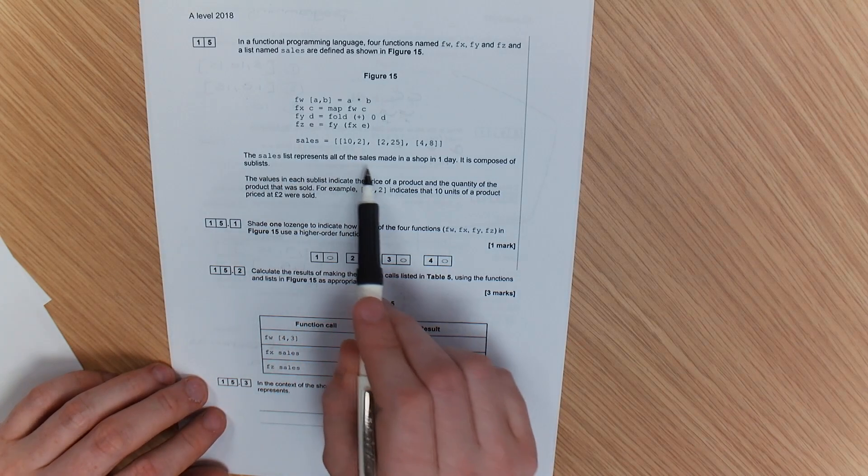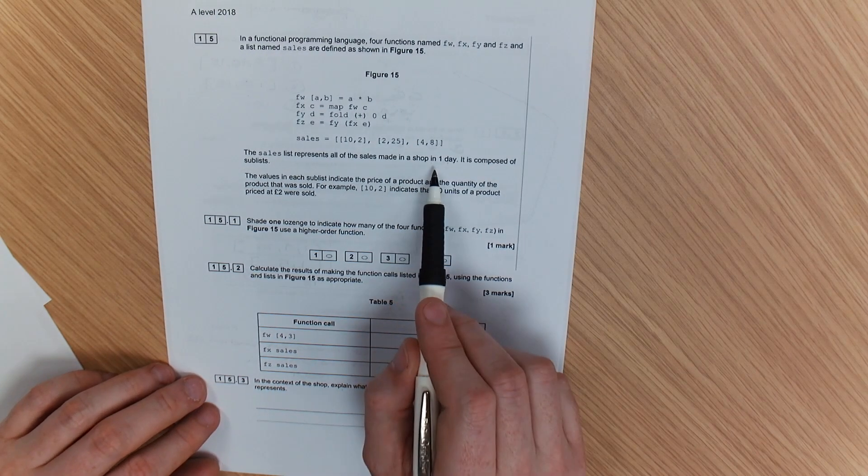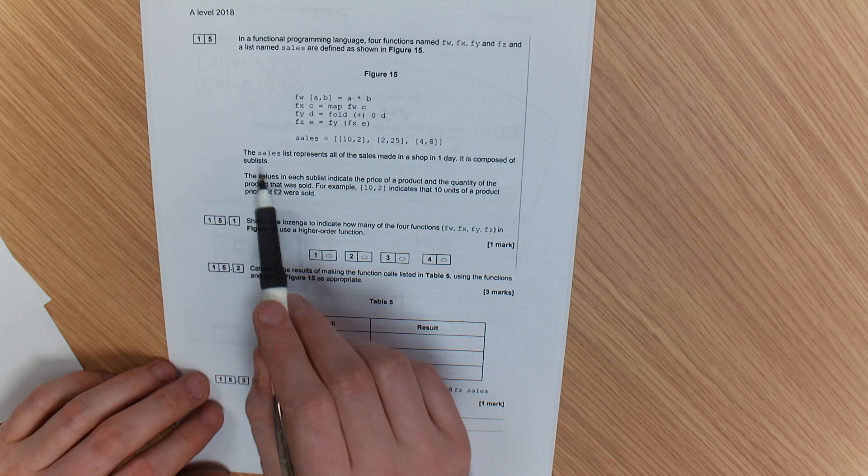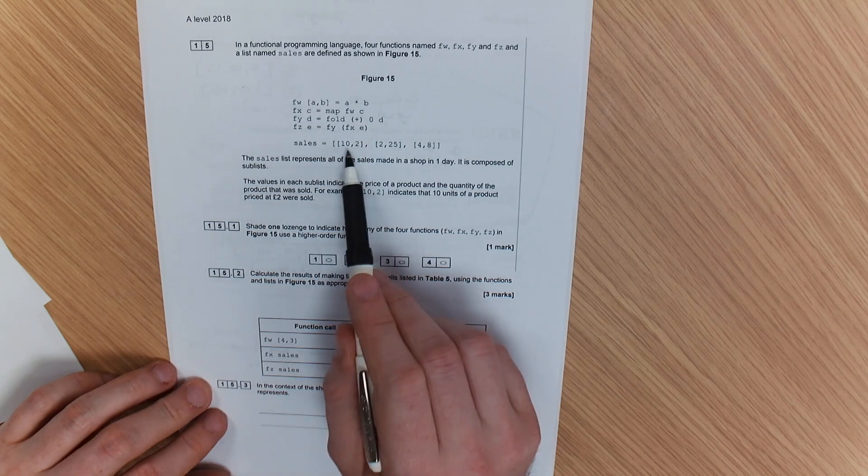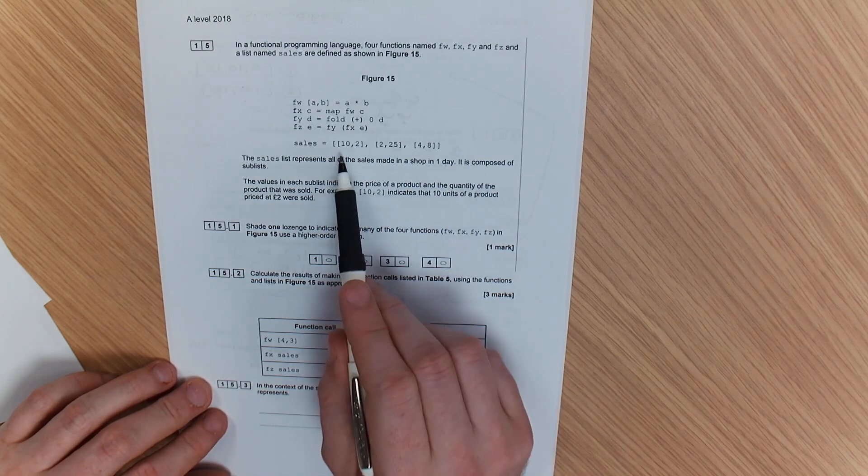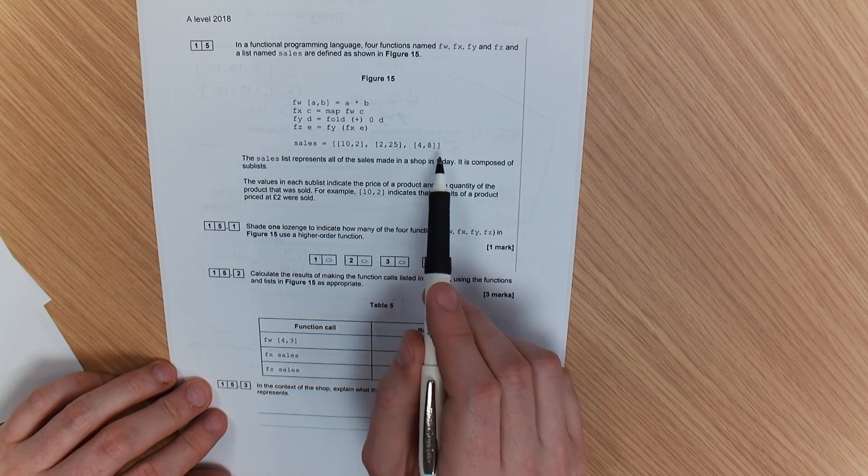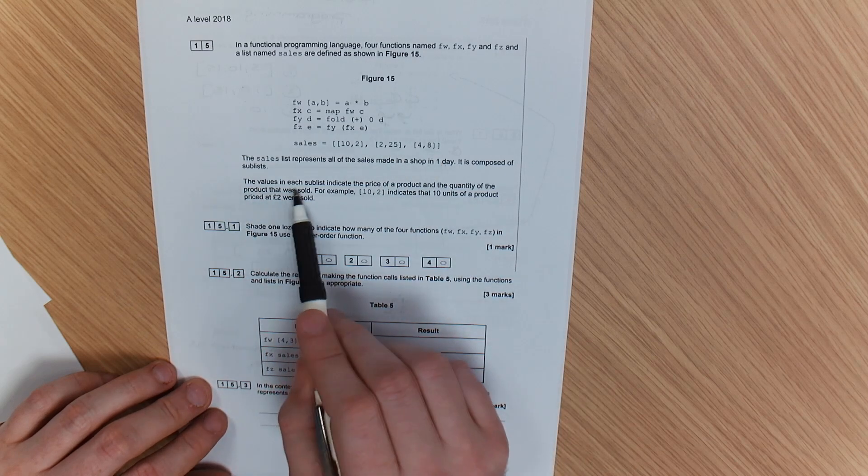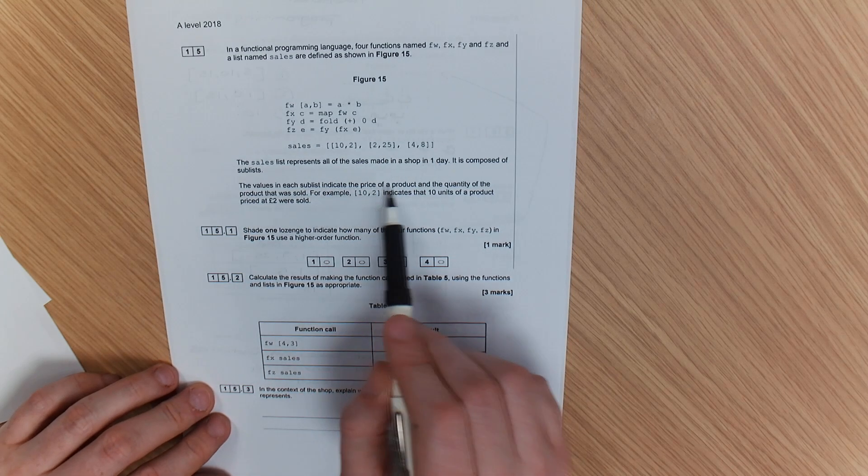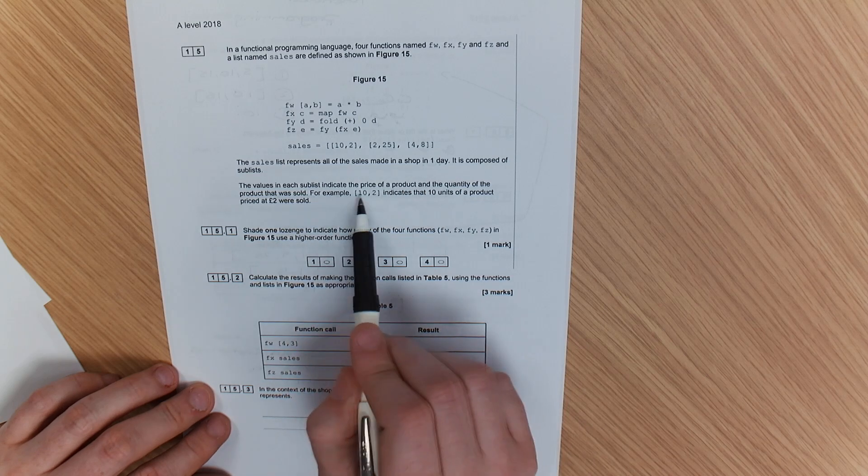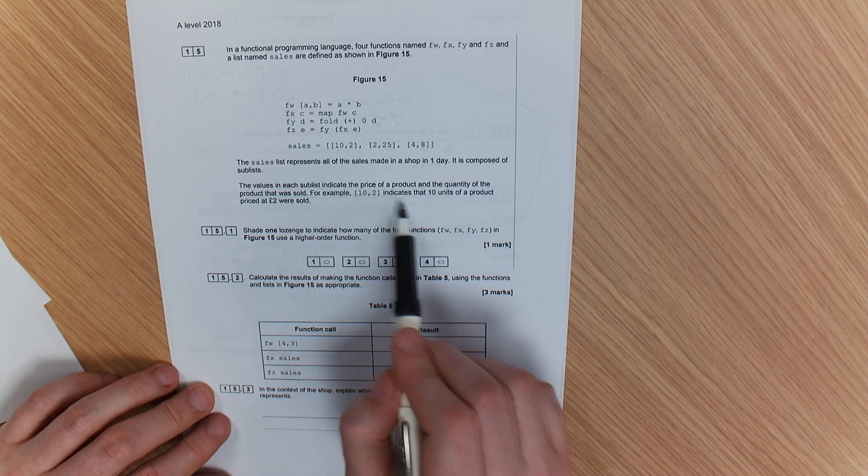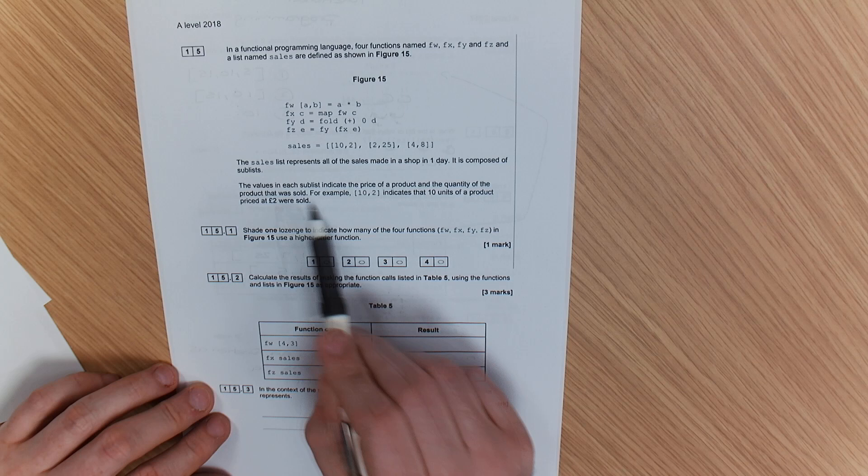The sales list represents all the sales made in a shop in one day. It is composed of sublists, so we've got a list within a list. So that's one day, that's the second day, that's the third day, and so on. The values of each sublist have been written as such. So we've got 10 to 2, and that indicates that 10 were sold at £2.